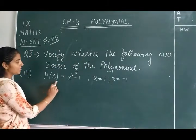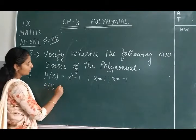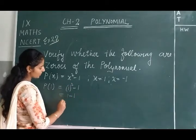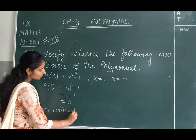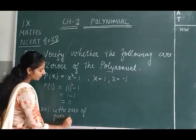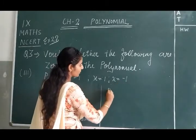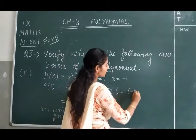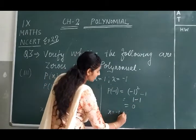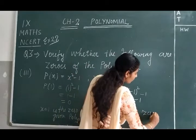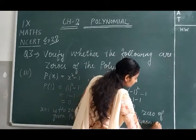The third part: p(x) = x² - 1, with x = 1 and x = -1. For x = 1: p(1) = 1² - 1 = 1 - 1 = 0. So x = 1 is a zero of the given polynomial. For x = -1: p(-1) = (-1)² - 1 = 1 - 1 = 0. So x = -1 is also a zero of the given polynomial.